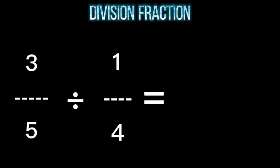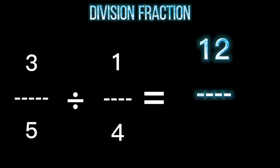For division fraction, we need to cross multiply 3 and 4, and it gives us the answer of 12. Next is 5 times 1, and it gives us the answer of 5. The final answer is 12 over 5.